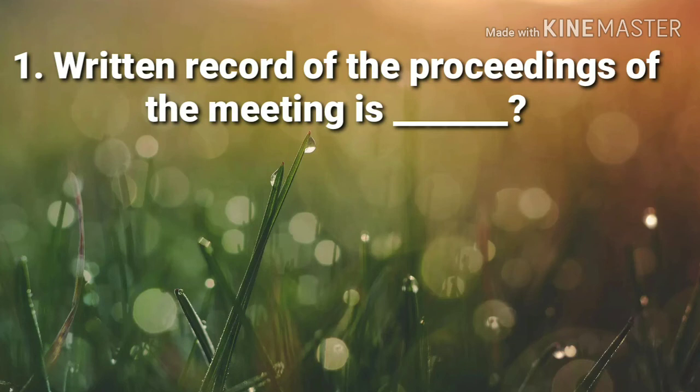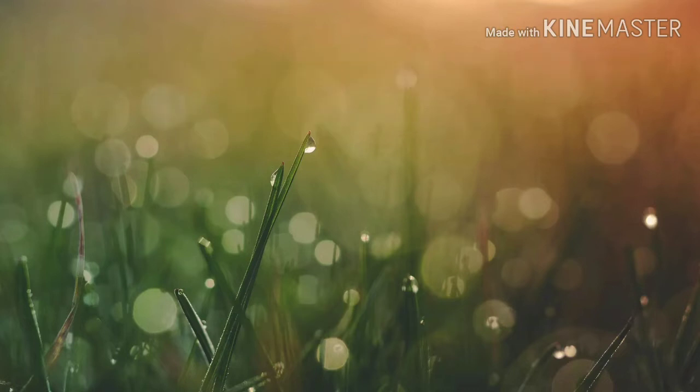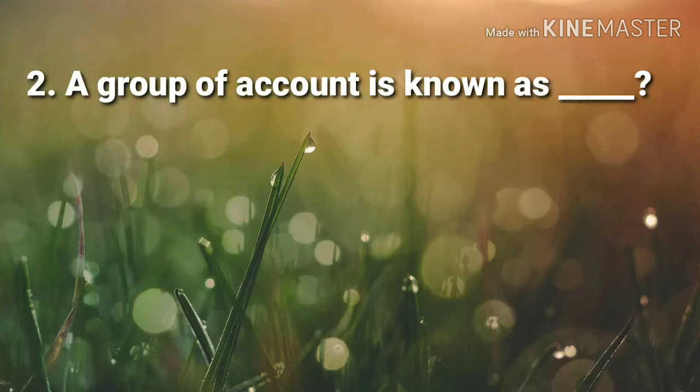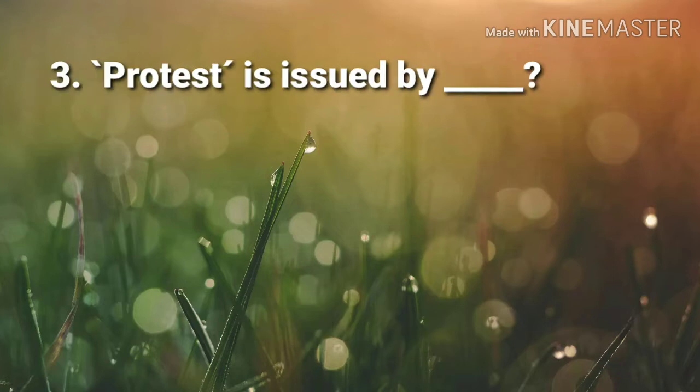1st question: Written records of the proceedings of the meeting is — Answer: Minutes. 2nd question: A group of accounts is known as — Answer: Ledger.